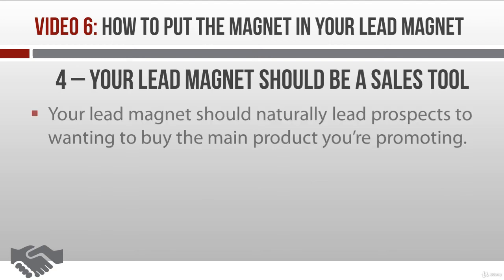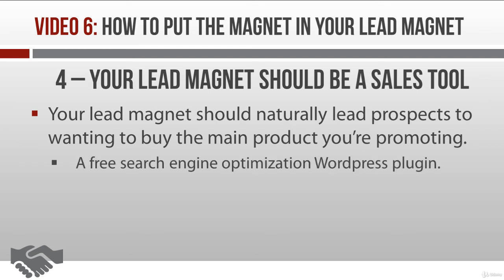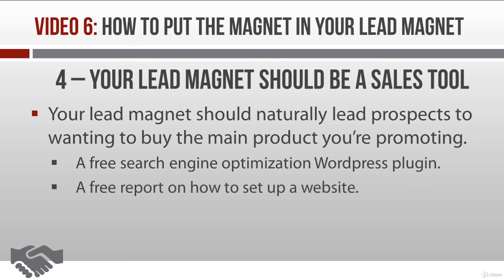Secondly, your product should naturally lead prospects to wanting to buy the main product you're promoting. For example, a free search engine optimization WordPress plugin would naturally lead to people wanting to buy a course on search engine optimization, because they'd get more benefit out of the plugin. Another example: people who opt into your list to get a report about how to set up a website will naturally purchase necessary items through your affiliate links, such as a domain name or web hosting.